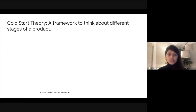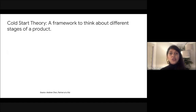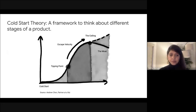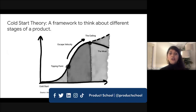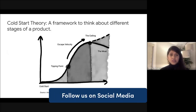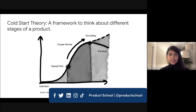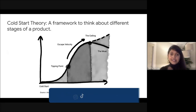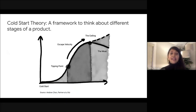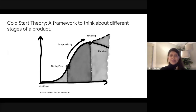Andrew Chen introduced this theory as a framework to think about different stages of a business. Cold Start theory lays out a series of stages that every product team must traverse to fully harness the power of network effects. The primary five stages are: first is the Cold Start; once you solve the Cold Start problem, you hit a tipping point; post that, you find an escape velocity; then hitting the ceiling; and once you hit the ceiling, you find a moat, which you continue to maintain.